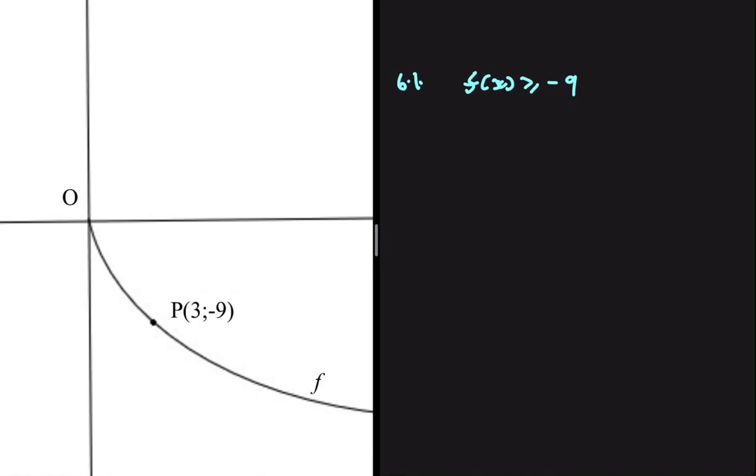You can see here at point P, the point we're given, that the y value is minus 9 and the corresponding value is 3. So 3 is one x value that we're interested in. But for which other values of x is f of x greater or equals to minus 9?